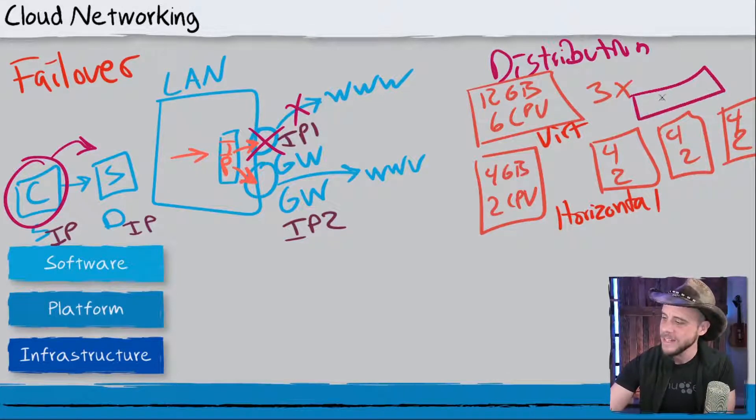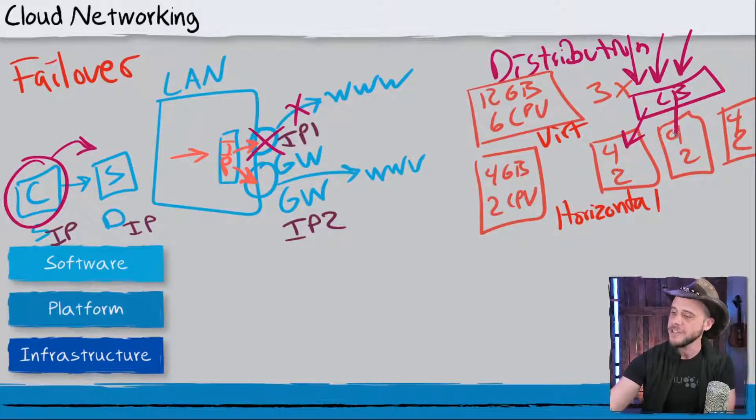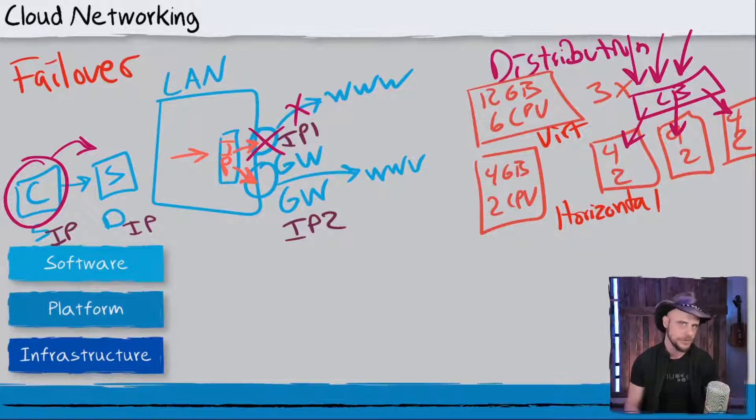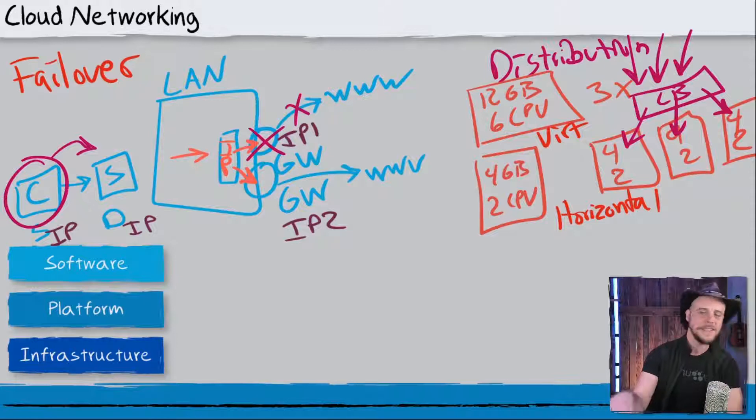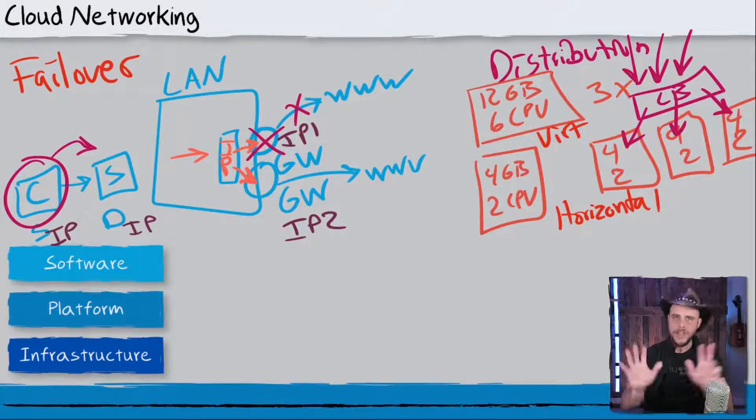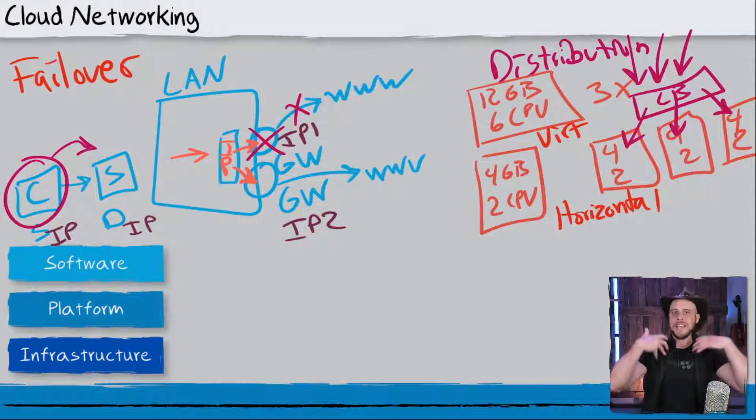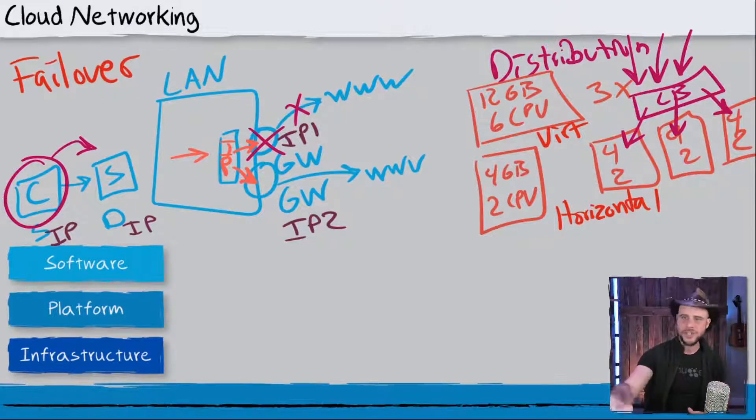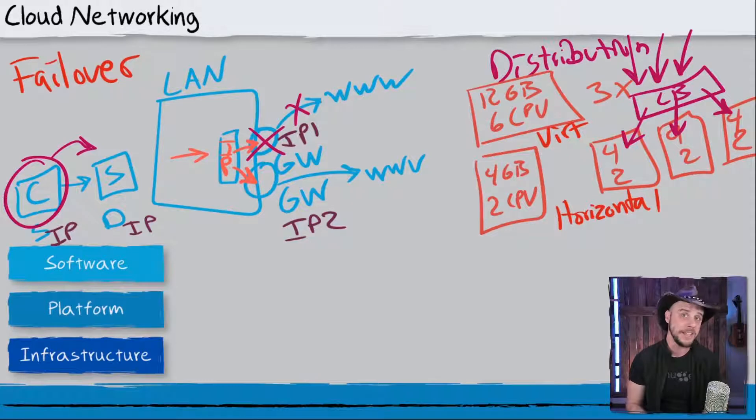And this is where our load balancer comes into play. The load balancer can then live out front, and that is where we direct all of our requests to. And in the background, the load balancer can distribute that traffic to the client systems and servers in the background that are receiving those requests. And the beautiful thing is again, that our clients, the folks that are sending it, the source origination points, they don't need to know how many or any of the other specifics about the systems in the background.